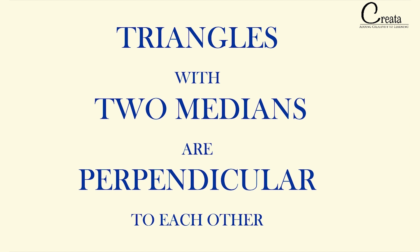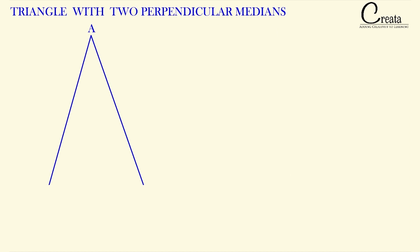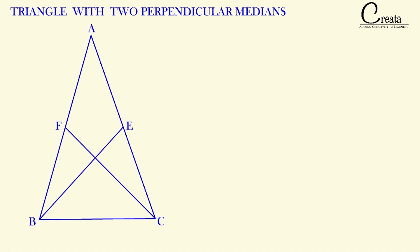Moving further towards the lecture, for the relation, firstly let's take a triangle ABC. Let's take two medians BE and CF, and these two medians are perpendicular to each other — meaning this angle is 90 degrees. Let's take the intersection point as point G; the angle BGC is 90 degrees.